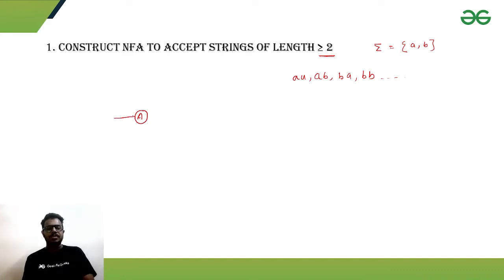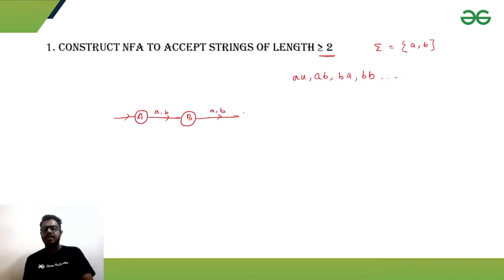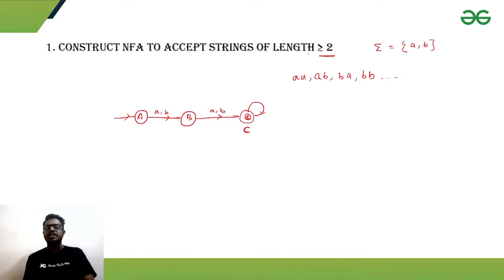Suppose capital A is our initial state. Given a or b, we go to an intermediate state B, which represents that we have already covered a single symbol. Then we need to cover another symbol, so we go to some final state C. The problem says length can be greater than or equal to 2, so once we've covered 2 symbols, if we get a or b again we go to the same accepting state.